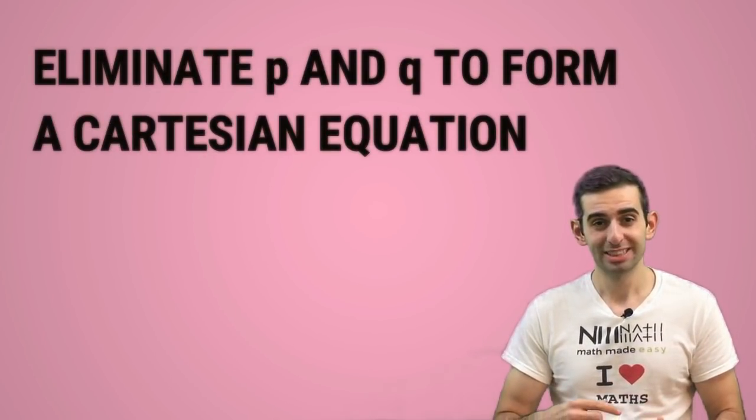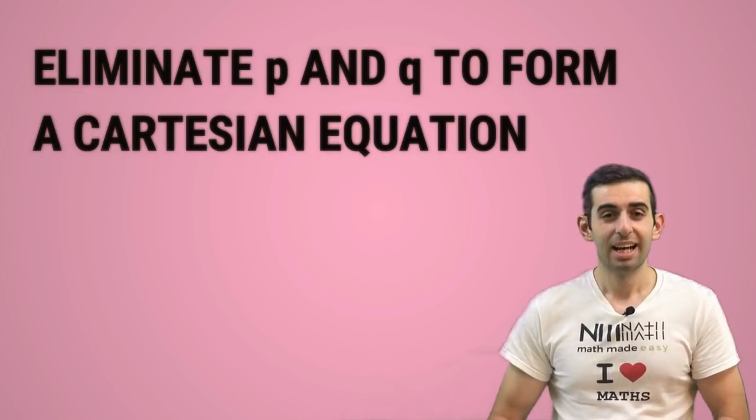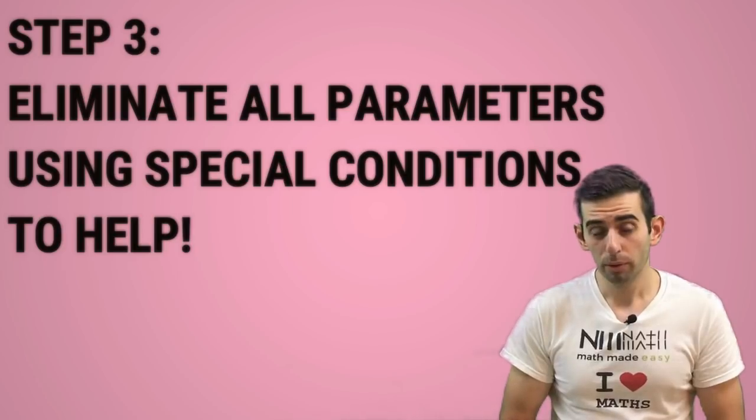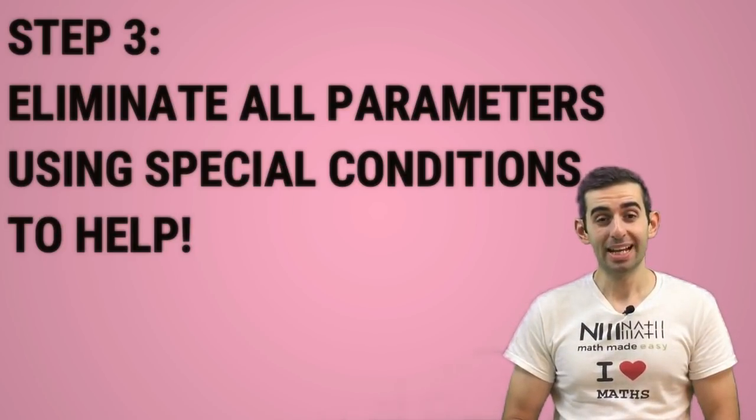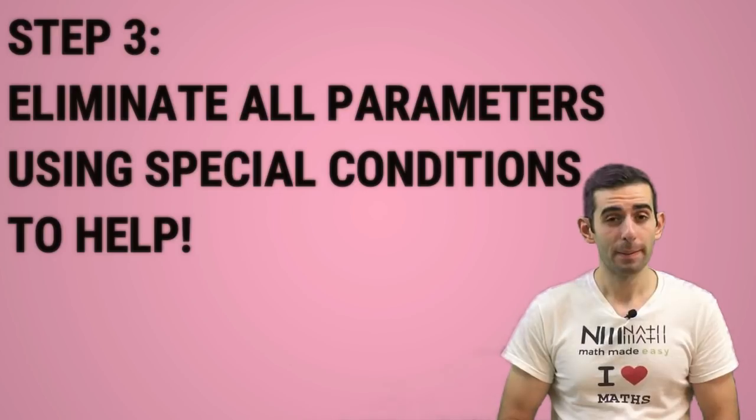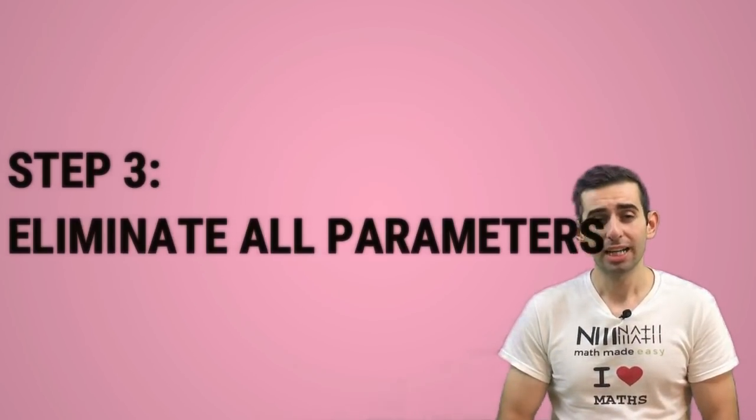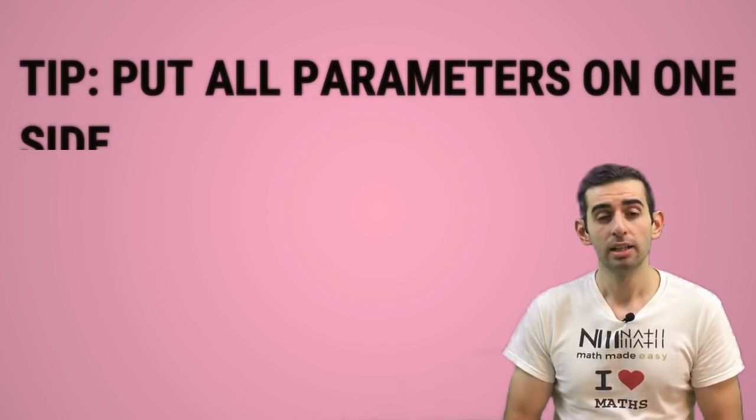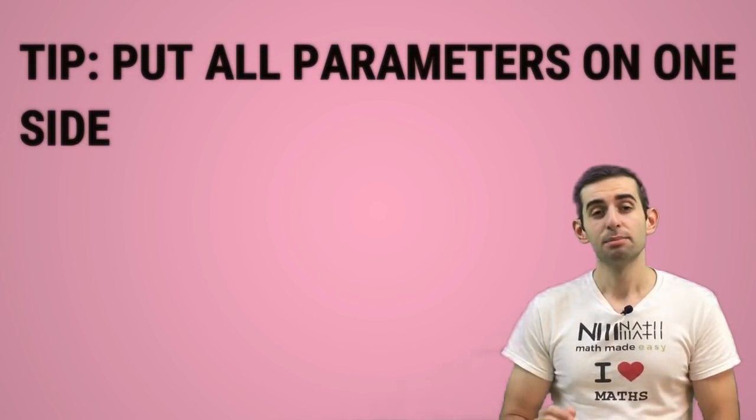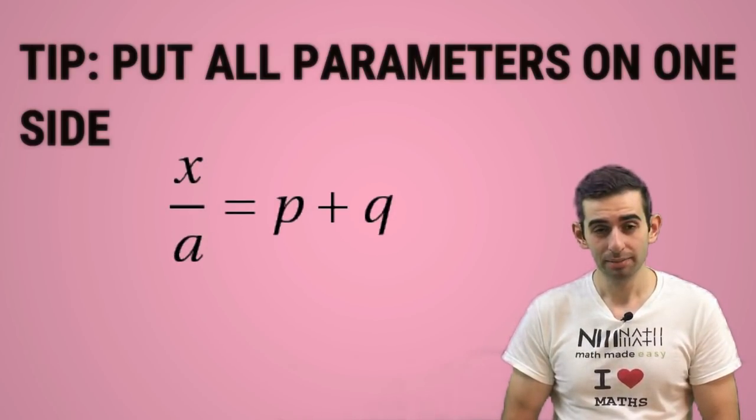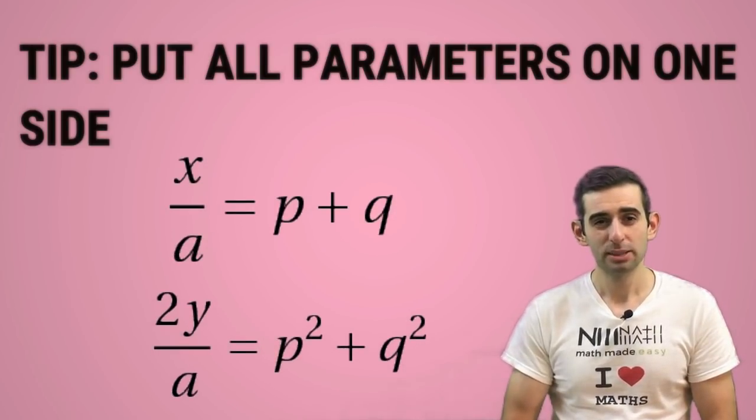The final step, step three, is eliminate all parameters to get the Cartesian equation using any special conditions to help. Now a great tip here is first to isolate the parameters on one side. For the x equation: p+q = x/a, and for the y equation: p²+q² = 2y/a.